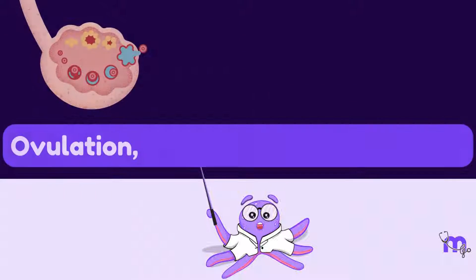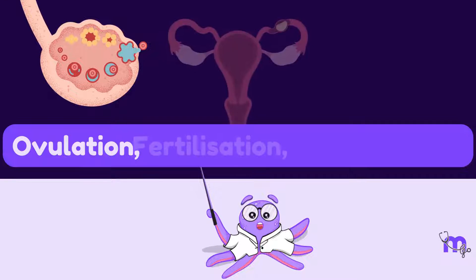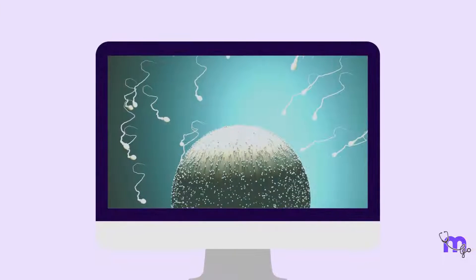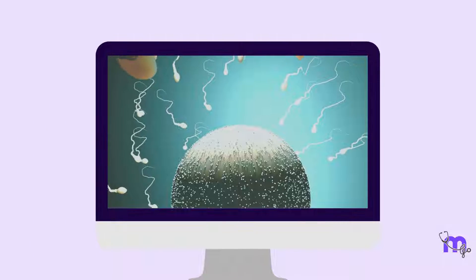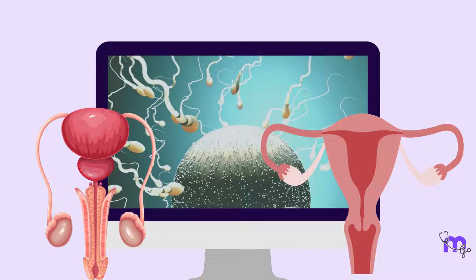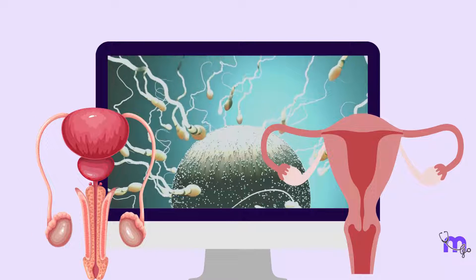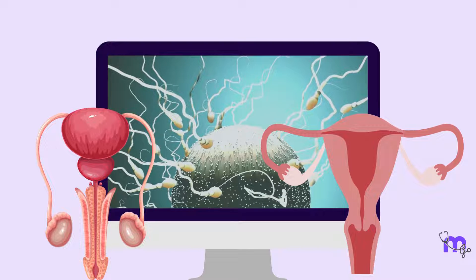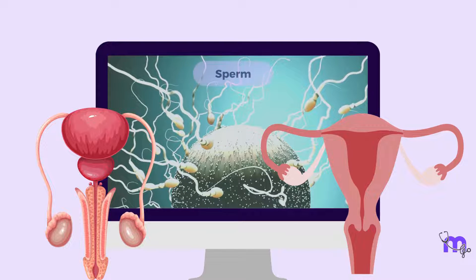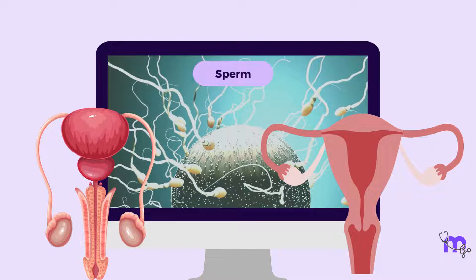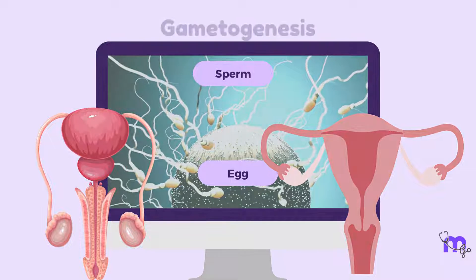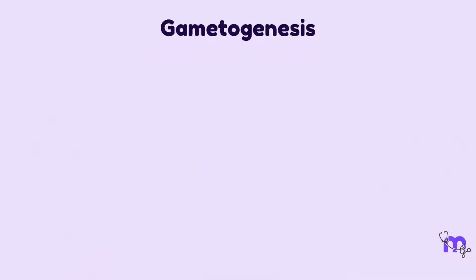Embryology: Ovulation, Fertilization and Implantation. Life begins within the depths of the male and female reproductive systems, where specialized cells called gametes — including sperm and eggs — are meticulously crafted through gametogenesis.